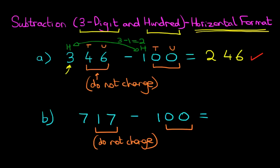The hundreds, however, we've got 7 and we've got 1. So 7 minus 1 equals 6. And that is the only digit which changes. So therefore 717 minus 100 is 617.